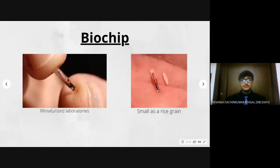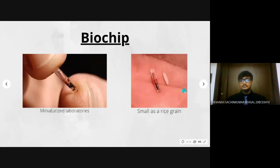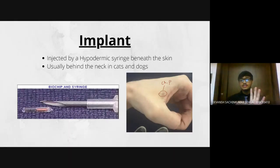Starting with, what is a biochip? In molecular biology, biochips are essentially miniaturized laboratories that can perform hundreds or thousands of simultaneous biochemical reactions. Biochips enable researchers to quickly screen large numbers of biological analytes for a variety of purposes, from disease diagnosis to detection of bioterrorism agents. Typically, they are the size of an uncooked rice grain. They are so small that they can be injected into the human skin using a hypodermic syringe needle. In humans, it is typically injected between their thumb and the index finger, while in pets, it is usually behind their necks.